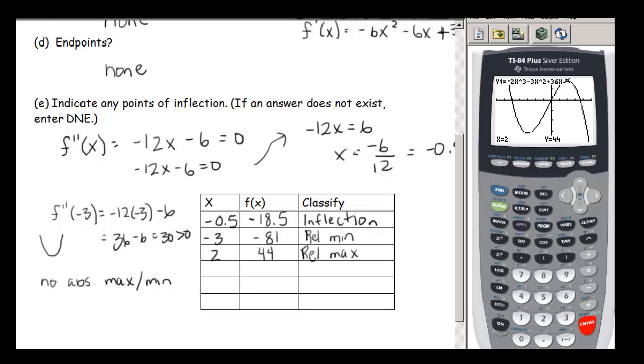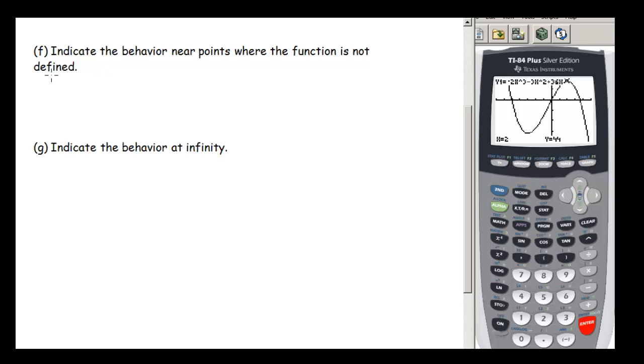We have a couple more questions that we need to answer about our function. In part f, they're asking us to indicate the behavior near points where the function is not defined. And if you remember, our function was that nice polynomial: f(x) is negative 2x cubed minus 3x squared plus 36x. This does not have any points where it's not defined, so there's nothing to describe here. If our function was something like f(x) equals 1 over x minus 1, then we would want to look at what's going on at x equals 1. We'll see an example of that later in another video.